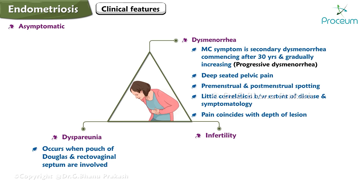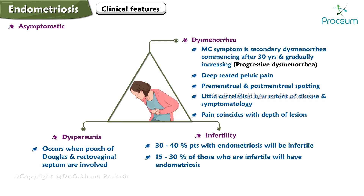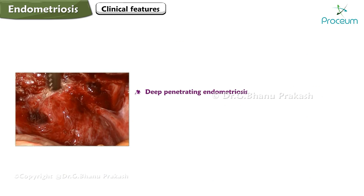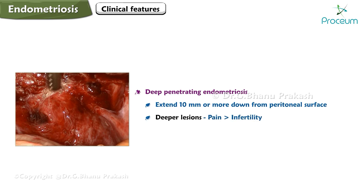Pain coincides with the depth of the lesion. Dyspareunia occurs when the pouch of Douglas and rectovaginal septum are involved. 30 to 40 percent of patients with endometriosis will be infertile, and 15 to 30 percent of those who are infertile will have endometriosis. Endometriosis is also associated with hyperprolactinemia and galactorrhea. Deep penetrating lesions extend 10 mm or more below the peritoneal surface and have a greater association with pain, while less deep lesions have a greater association with infertility.